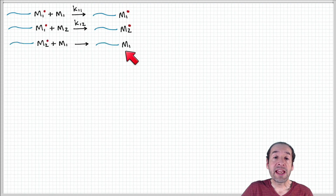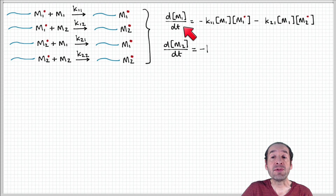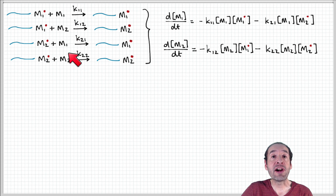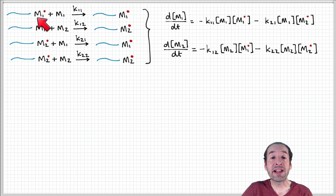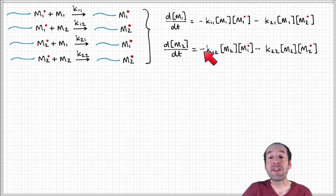Now, recalling the four propagation processes, I want to write equations for the rate of change of monomers M1 and M2 in the reaction mixture. Previously we wrote rates for the active chains M1• and M2•; here we write them for the free monomers. Monomer M1 is consumed by the reaction where it adds to a chain ending in monomer 1 (rate constant K11) and by the cross-reaction where it adds to a chain ending in monomer 2 (rate constant K21). Similarly, monomer M2 is consumed when added to a chain ending in either monomer 1 or monomer 2.